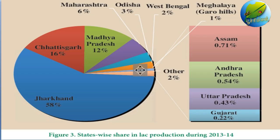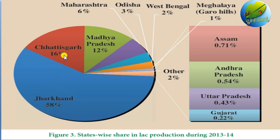Looking at the state-wise share in lac production, you can clearly see that Jharkhand contributes around 58% of the total production. Chhattisgarh is the second highest producer, contributing around 16%, followed by Maharashtra at around 12%. All other states contribute very little.